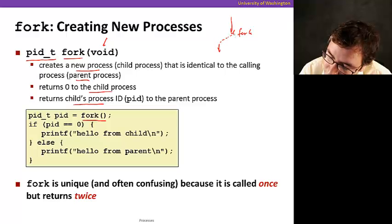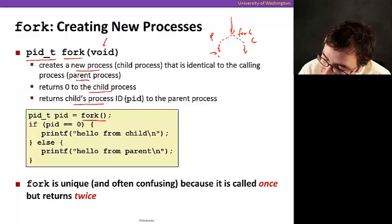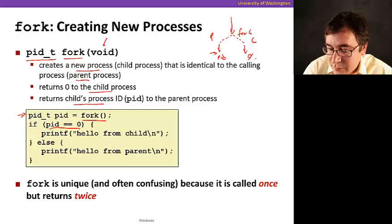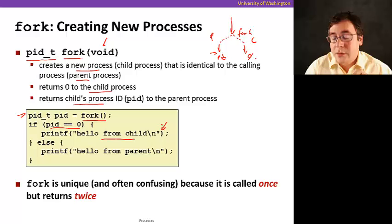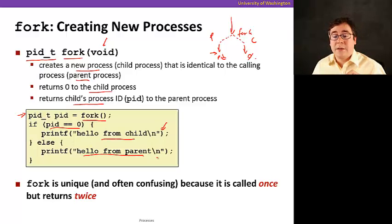Now you're going to replicate the process. It's going to have two processes here. This is the parent, and this is the child, and it's going to return the process ID to the parent and it's going to return zero to the child. So in this example here, we call fork, and then we check. If the PID return is zero, that means this is going to be executing the child, and if not zero, it's going to be executed in the parent.